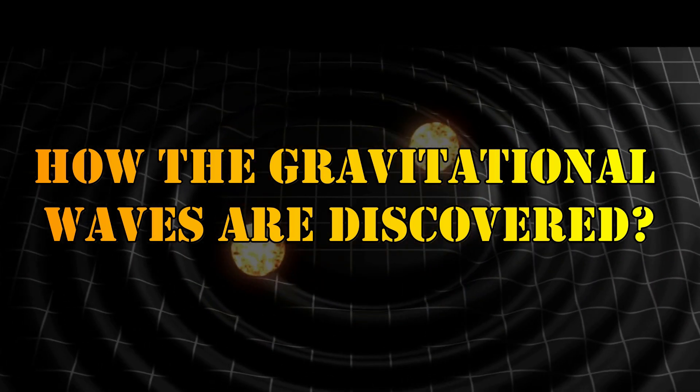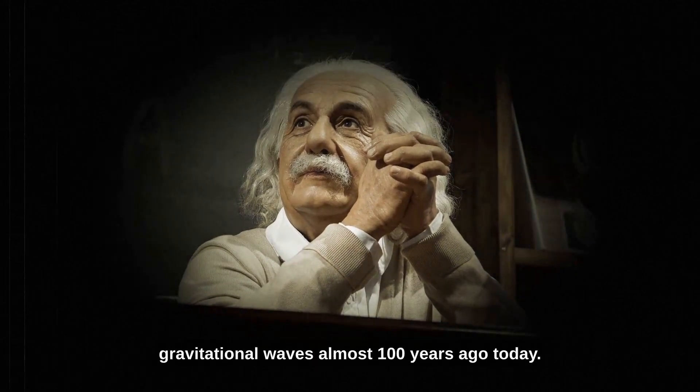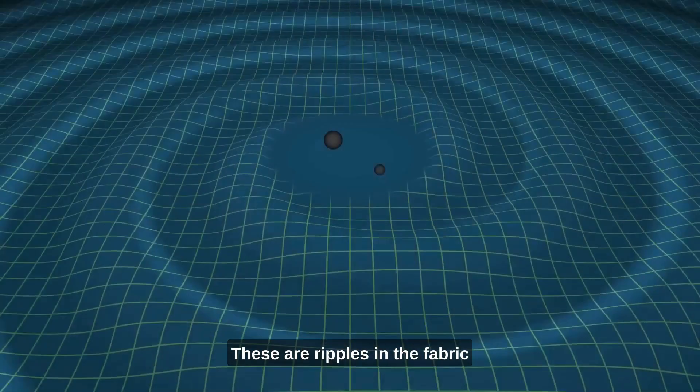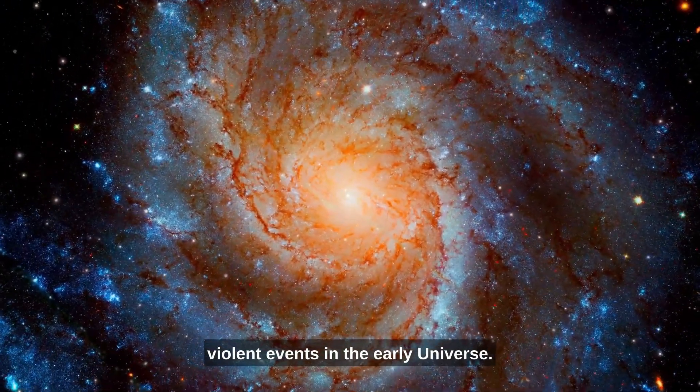How the gravitational waves are discovered. Albert Einstein predicted the existence of gravitational waves almost 100 years ago today. These are ripples in the fabric of space-time that are caused by very violent events in the early universe.